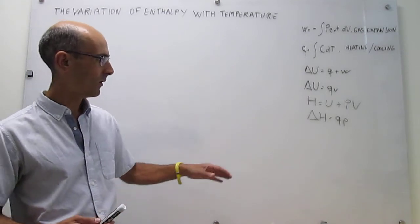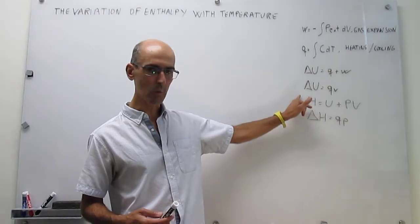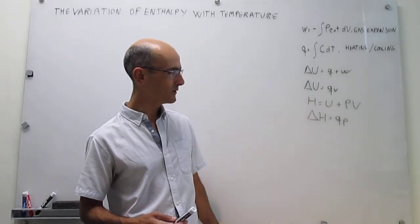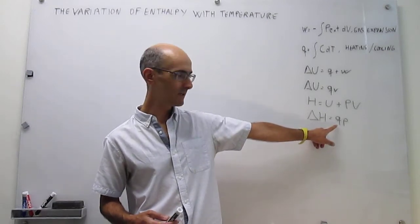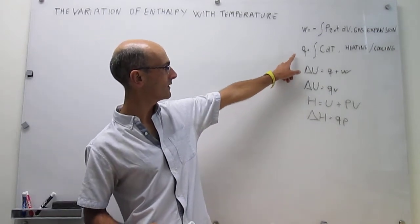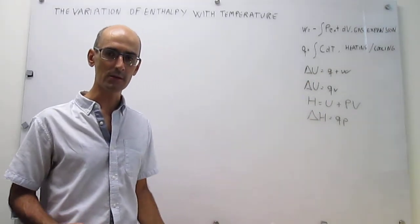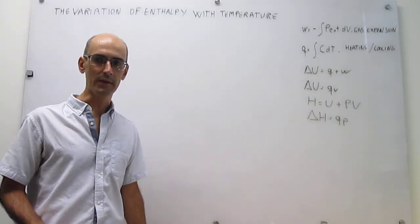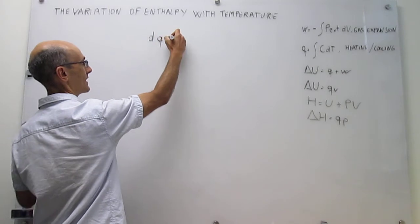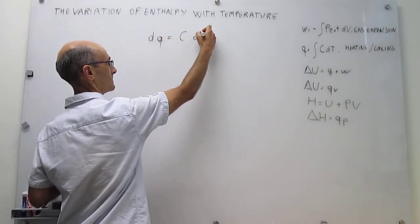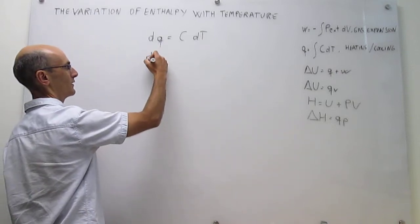Our goal is to find out how enthalpy depends on temperature. It's not very obvious from the two equations we have at our disposal how the temperature dependence happens to be. But notice that here we have heat, and we actually have the variation of heat with temperature in that expression. So we really only have to put these expressions together. If we take the way that heat varies with temperature, and then take the enthalpy expression in differential form, we have the following.